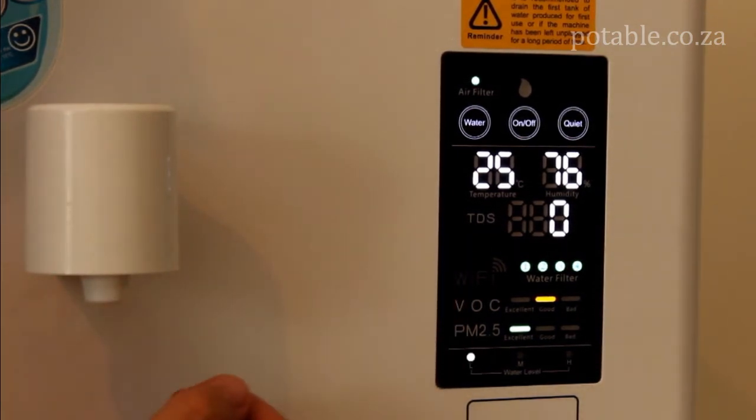The quiet switch is designed to run the machine at a lower frequency so that it is quieter. However, if you run the machine at a quieter rate the water production will be a little less.